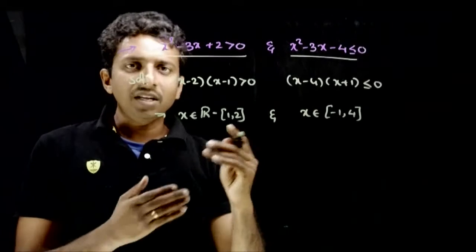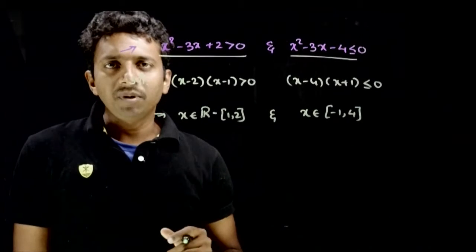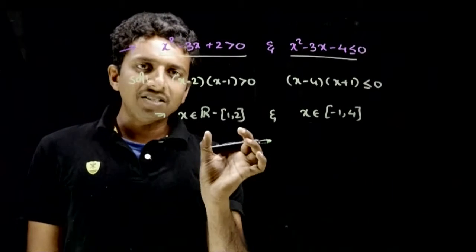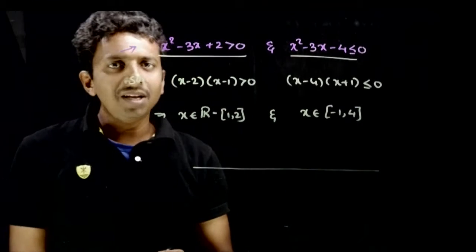Now I need to find the simultaneous solution. Both of them should happen, so we need to take the intersection of these two solutions. So let us plot these solutions on a real number line.